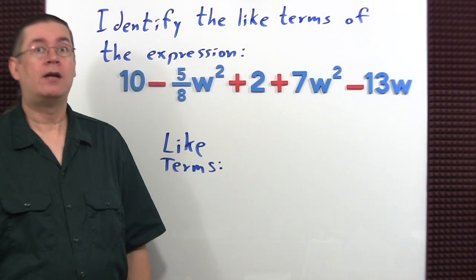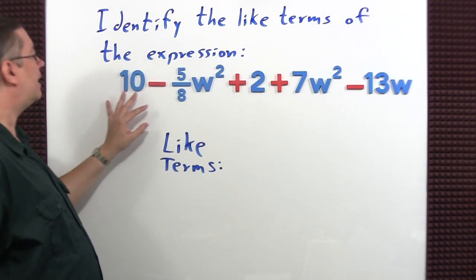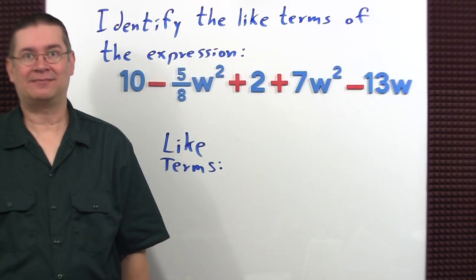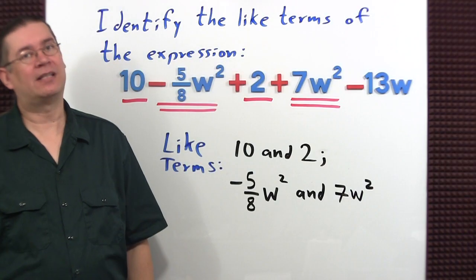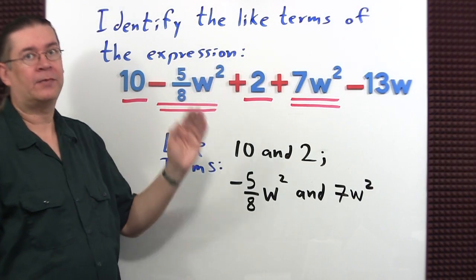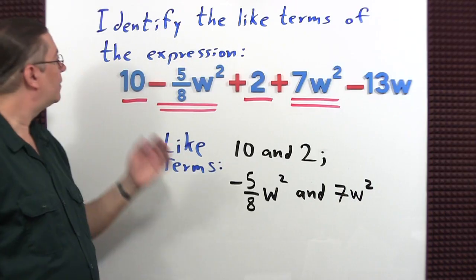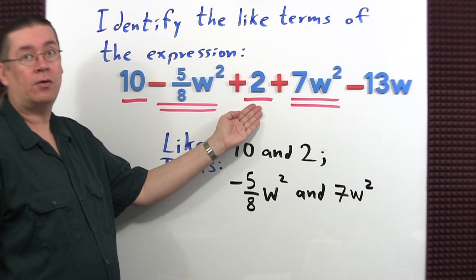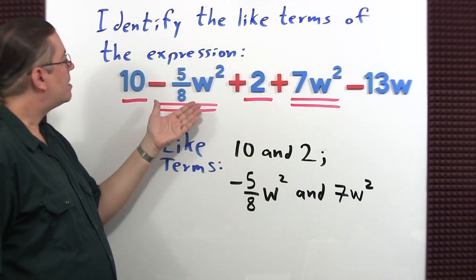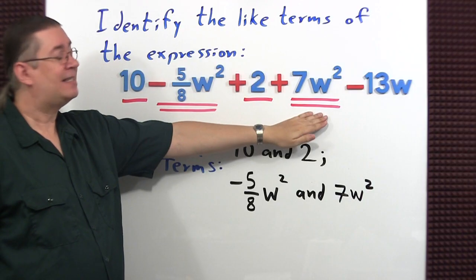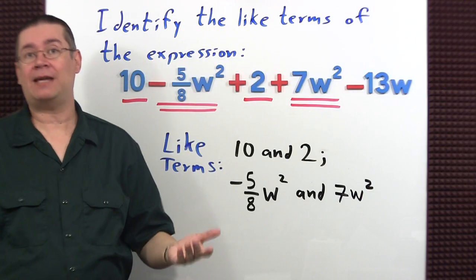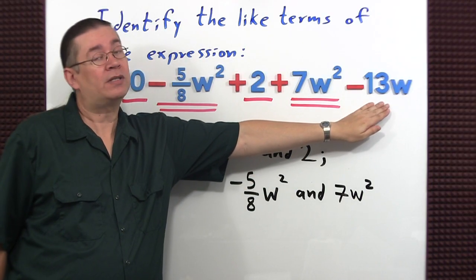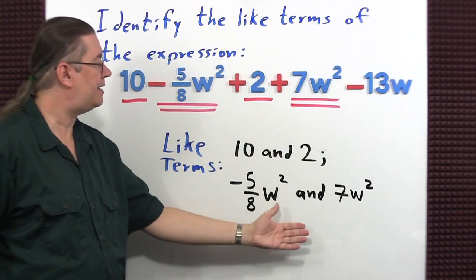This next example is not a homework problem for you to turn in, but I want you to try to identify the like terms of this expression before I present the answer. This one was a little sneaky because I threw in a square for the variable. Starting on the left-hand side, we have a constant of 10 and here's a constant of 2 — those are like terms. Negative 5, 8w squared, and 7w squared are like terms; they have the same variable parts including the exponents. We do not include negative 13w because it's not being squared. So here is the answer.